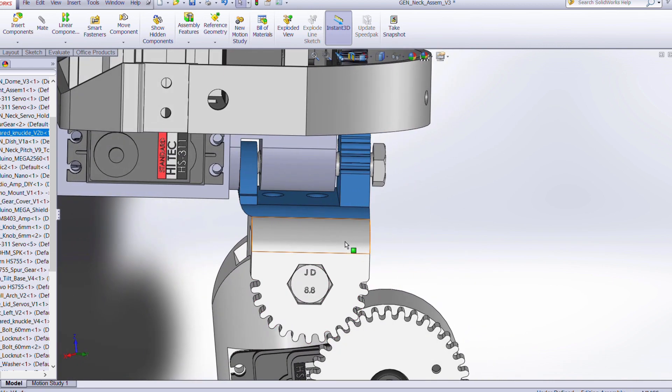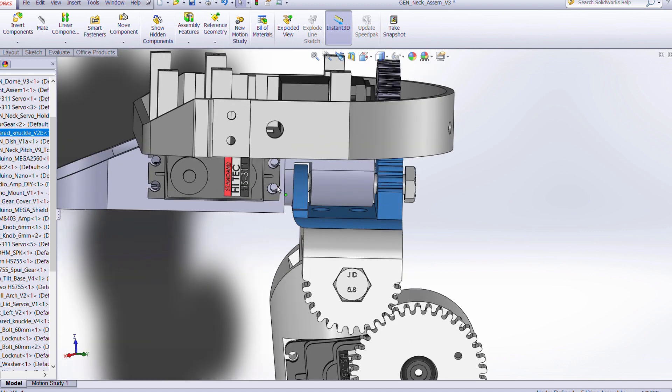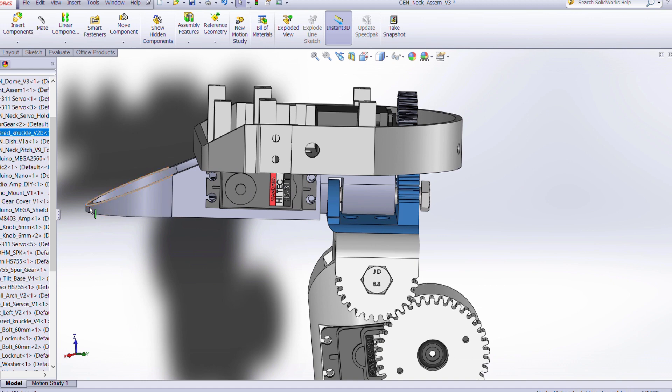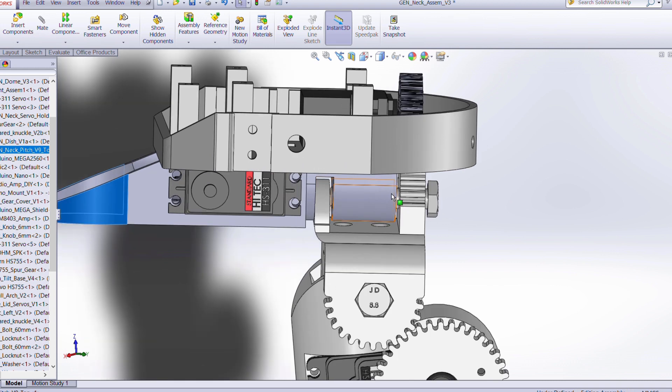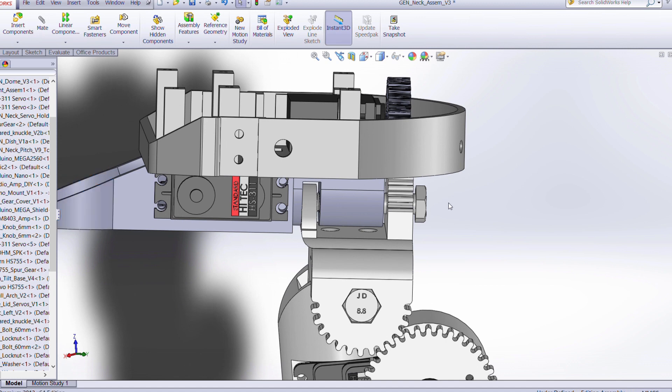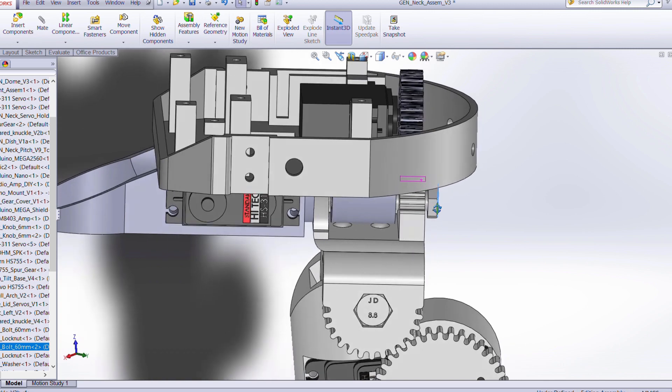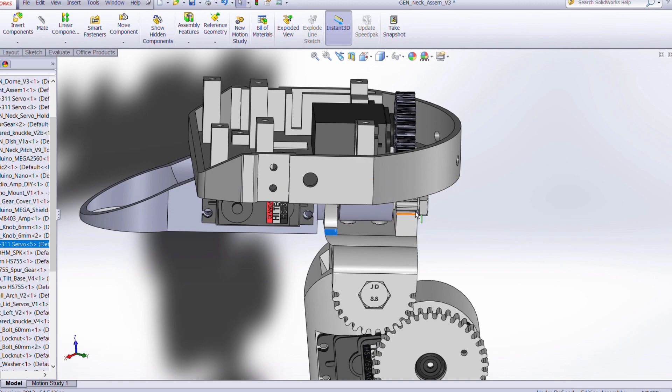And then that section mounts up to the next geared knuckle over here. Above the tilt part here we have this geared knuckle which attaches to the real base of the skull, and the face will actually mount right here against this blue section. I'm not going to show that now because it plugs up quite a bit of the drawing. But this is all held together with an M8 bolt.